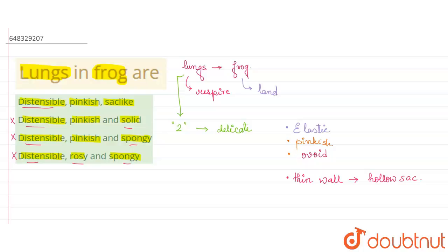So the only correct answer is distensible and they are somewhat pinkish and sac-like, and they lie on either side of the esophagus. This particular structure lies on either side of the esophagus that is present in the frog.